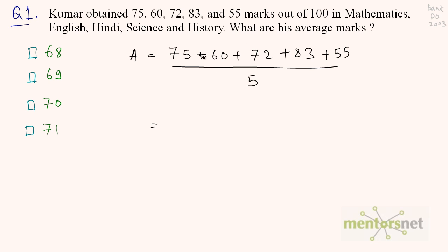If you add all of these numbers you get 345, divided by 5, and that's equal to 69. There is the answer — Option B.